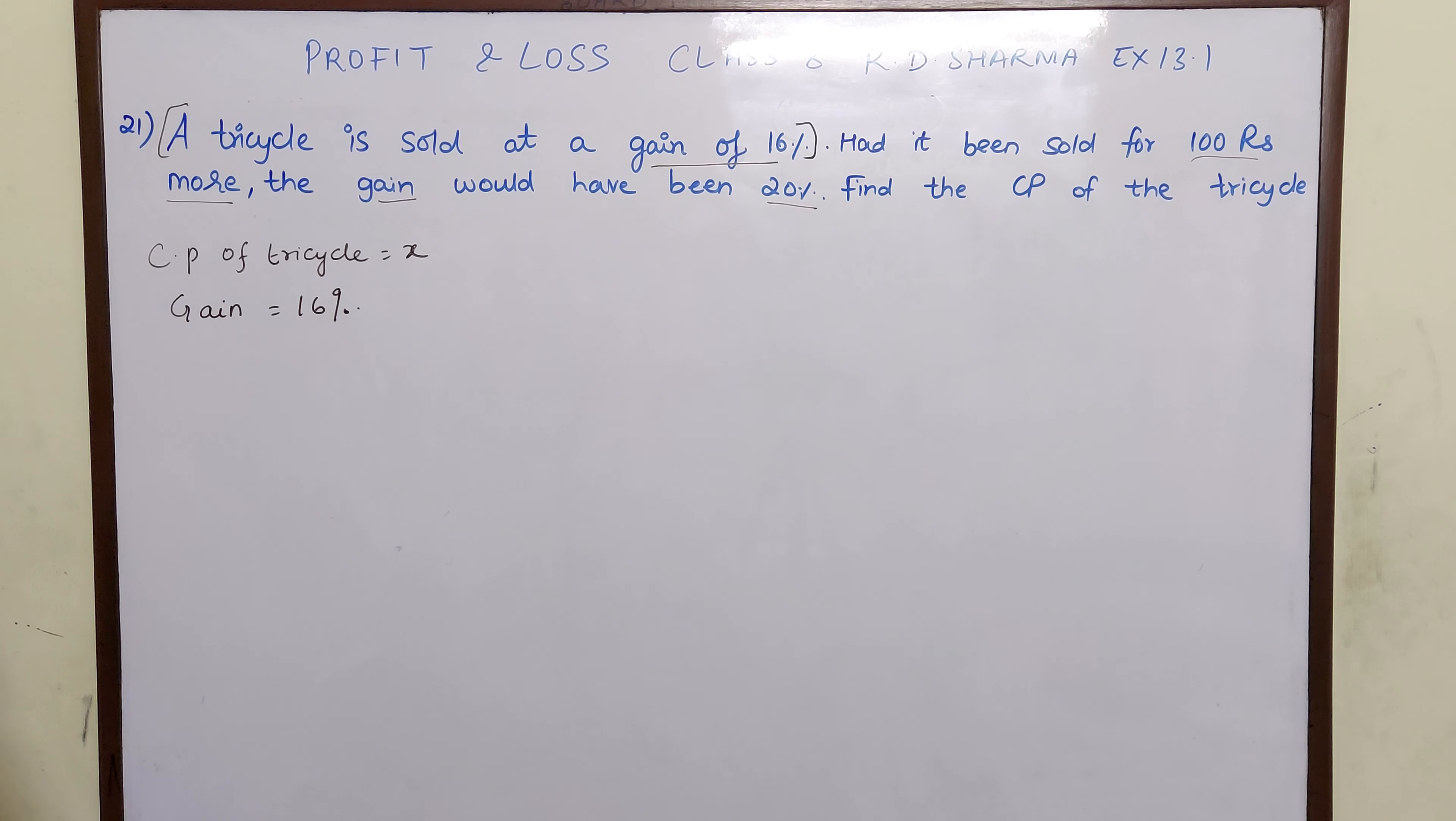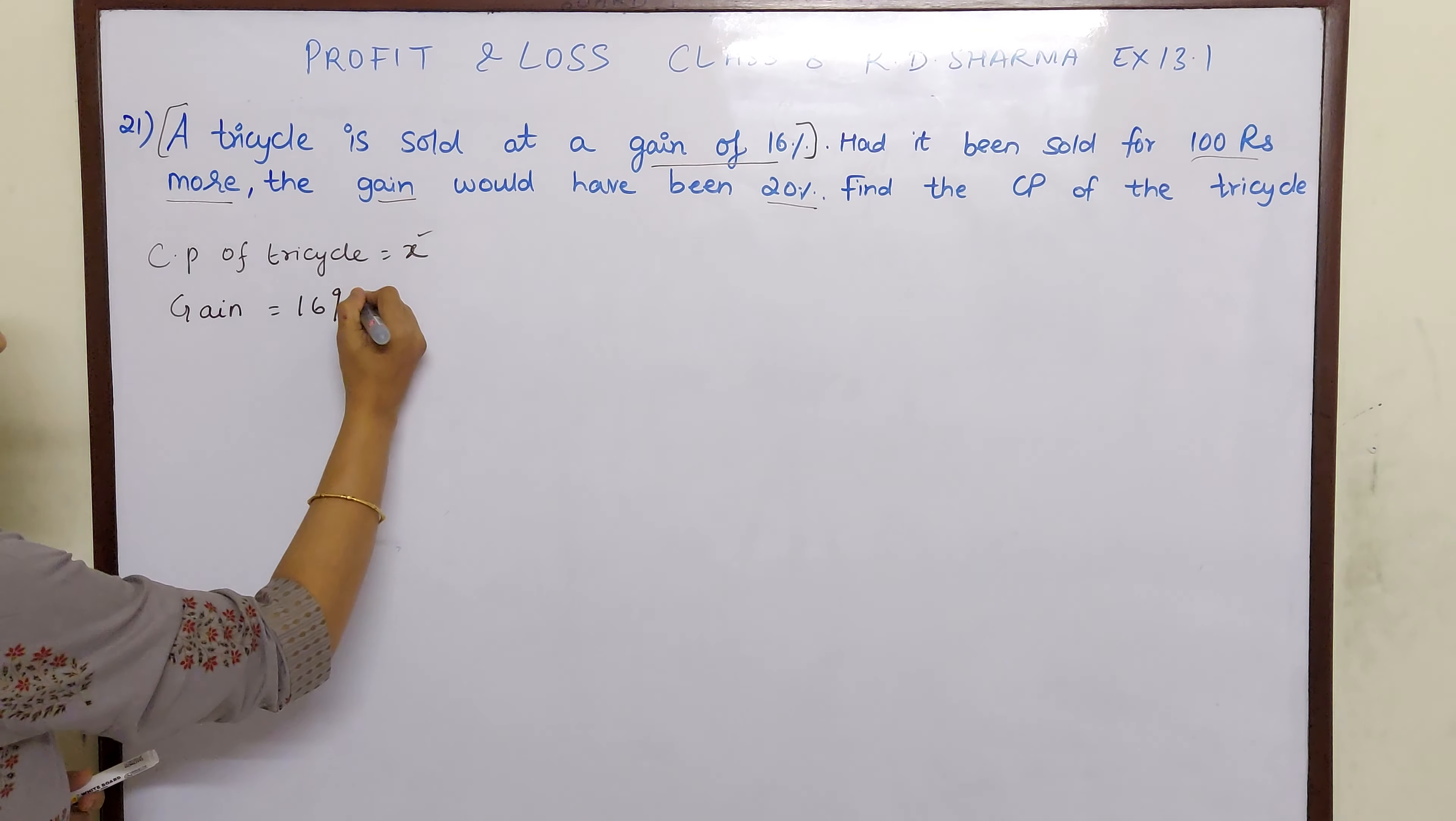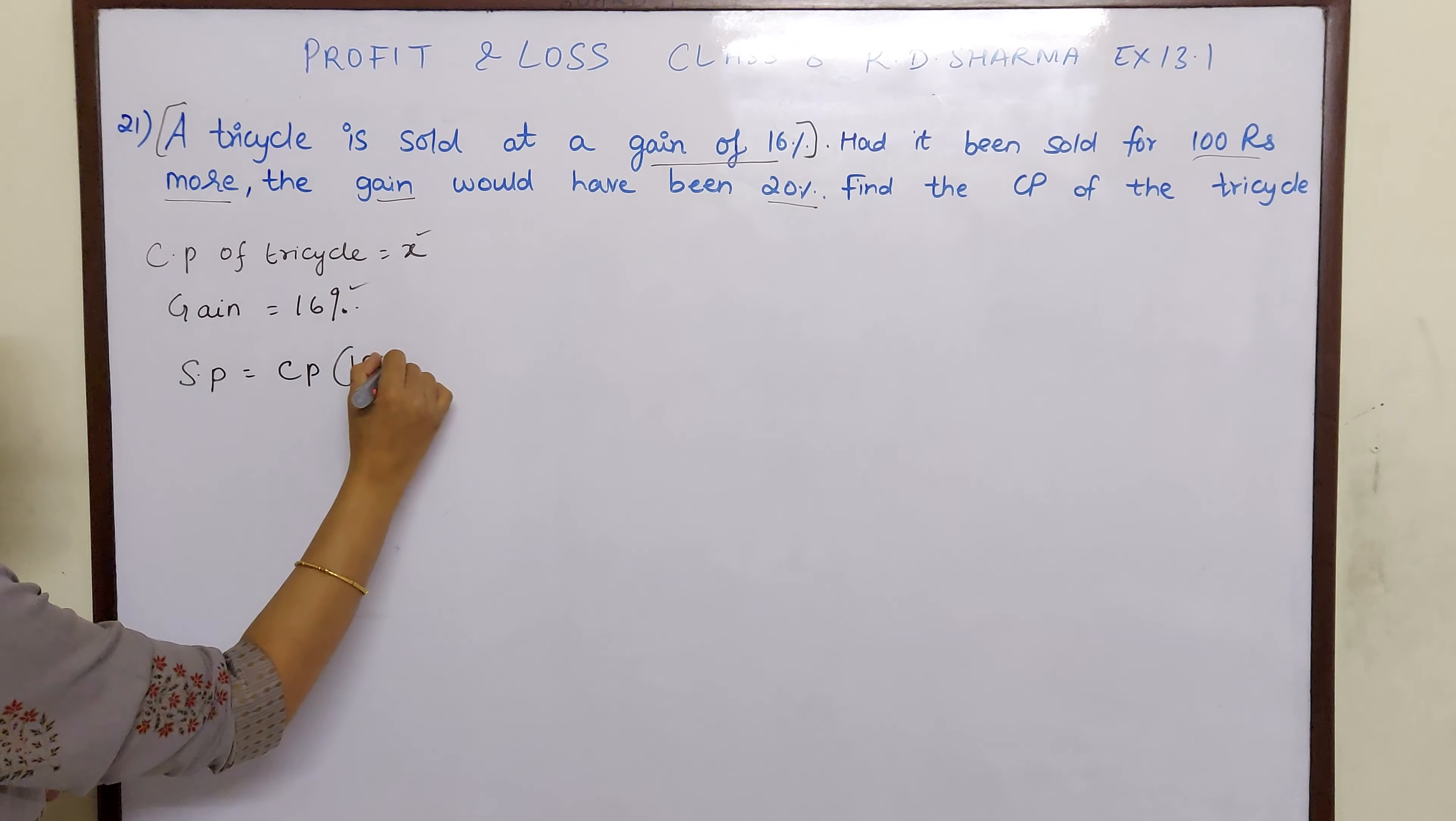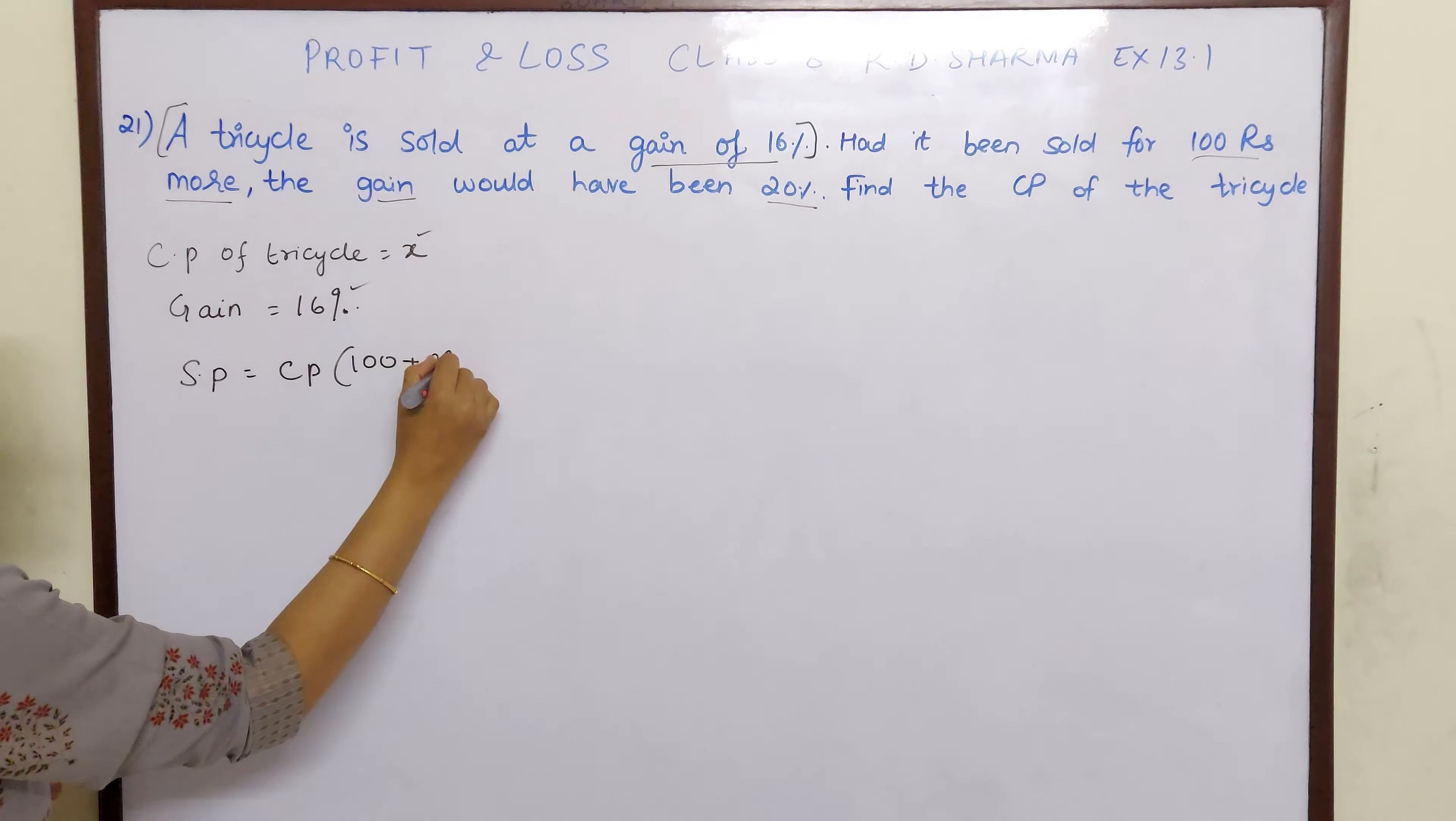What have we learnt in our previous lectures? That when cost price and gain or loss percent is given, we can find selling price by using the formula. So selling price is equal to CP times 100 plus profit percentage by 100.